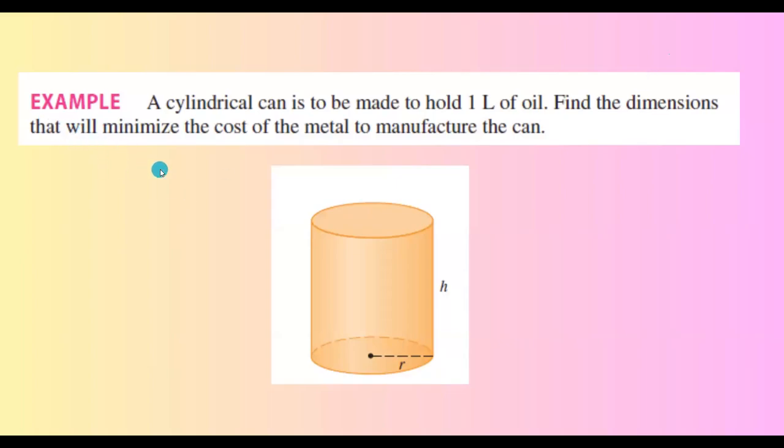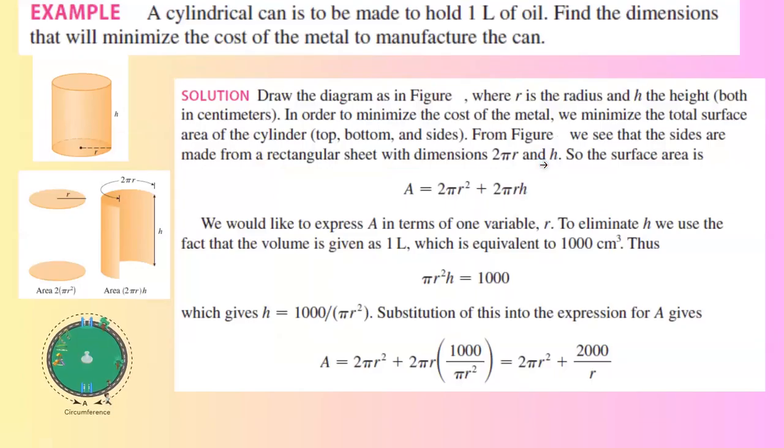In this question you are asked to find the dimension of a cylindrical can to minimize the cost of the metal. Now please note that your can can hold one liter of oil. First of all, since it's an optimization problem we need to find a relation between variables and take the derivative.